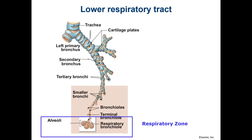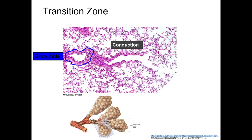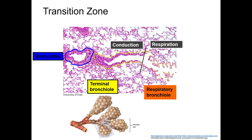External respiration, or the movement of oxygen from the lungs to the blood and of carbon dioxide from the blood to the lungs, takes place in the respiratory zone. Deep in the lungs, the terminal branches of the bronchioles, called the terminal bronchioles, subdivide into two or more respiratory bronchioles at what is called the transition zone. Here the conduction part of respiration ends, and gas exchange begins.